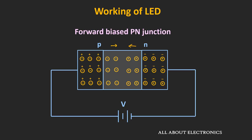And during the movements, these charge carriers recombine with each other. So in the P-N junction diode, whenever these electrons and holes recombine with each other, then they release the energy in the form of heat. But in case of the light emitting diode, whenever they recombine with each other, then they release the energy in the form of light.